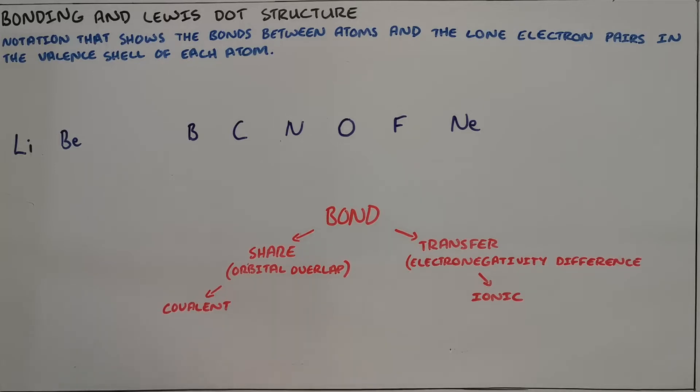So the valence shell electrons are the only ones that take part in bonding and therefore the only ones that are important to consider. Lithium, being in group 1, only has one valence electron. We can either indicate that with a dot or with a cross.